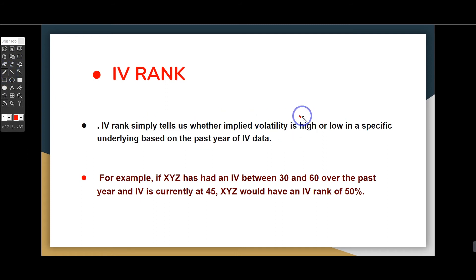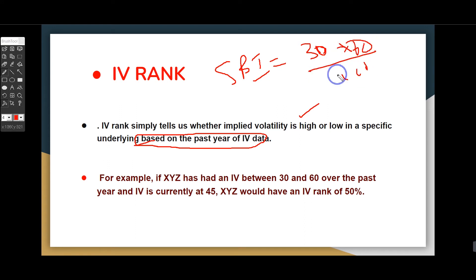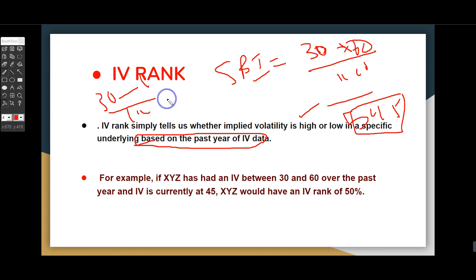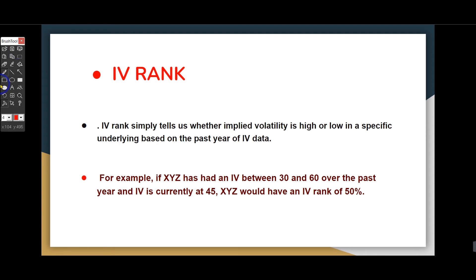The IV rank simply tells us whether implied volatility is high or low in a specific underlying, based on the past year. For example, if you have an XYZ stock and the low IV is 30 and the high is 60, the IV rank would be calculated from that range. If XYZ has IV between 30 and 60 over the past one year, and IV is currently 45, XYZ would have an IV rank of 50 percent.